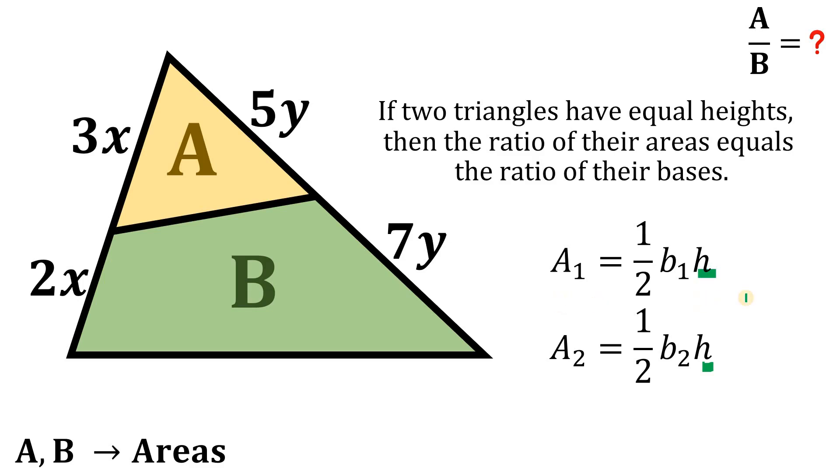Now, if we get the ratio of these two areas, of these two different triangles, take note, we can eliminate 1 over 2 and 1 over 2. This is just 1. And also the same height of H. This is also equivalent to 1. Therefore, the ratio of their areas simply equal to the ratio of their bases.